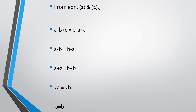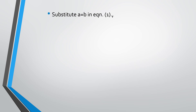Now we have to prove that c is equal to 0. Substituting a is equal to b into equation 1: a minus b plus c is equal to 0. Since a is equal to b, substituting gives b minus b plus c is equal to 0. Since b minus b equals 0, the value c is equal to 0. We have proved that a is equal to b and also c is equal to 0.